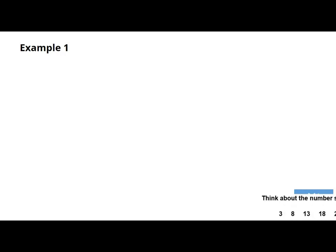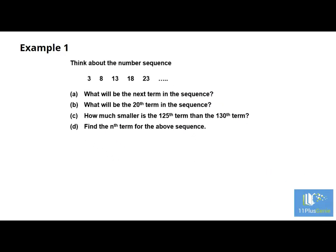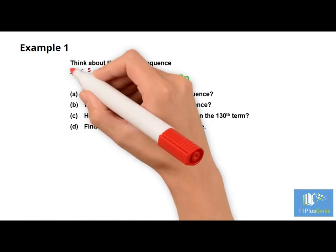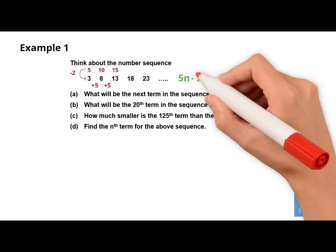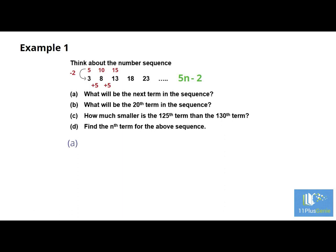Let's look at some typical 11 plus exam questions. Example 1. Think about the number sequence: 3, 8, 13, 18, 23. First we will work out the Nth term for the sequence. The difference between each term is add 5, which gives us the 5 times table. Above the given sequence we write down the 5 times table. We must subtract 2 from the 5 times table to get the given sequence. The Nth term is 5N minus 2.